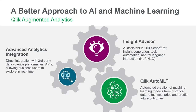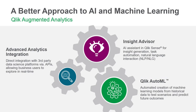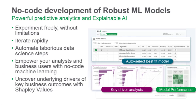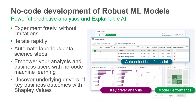Qlik AutoML is part of a full suite of augmented analytics capabilities available in Qlik Cloud. It recognizes patterns and drivers in historical data to create machine learning models that can predict future outcomes, using a simple no-code approach for business analysts and analytics teams.